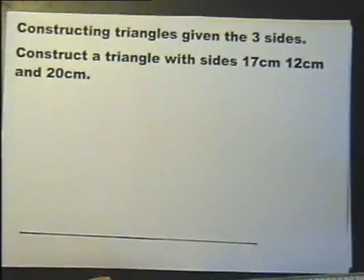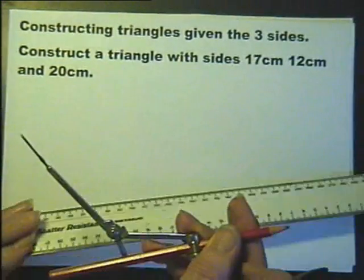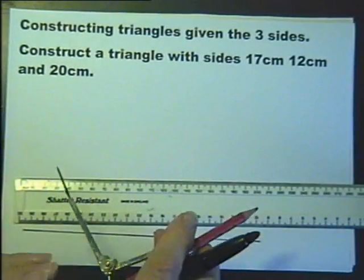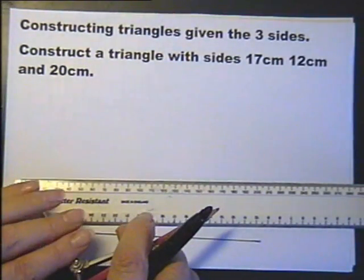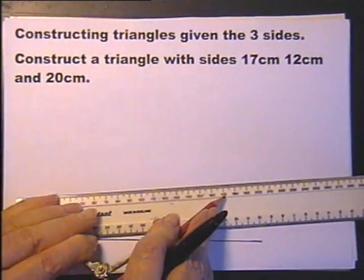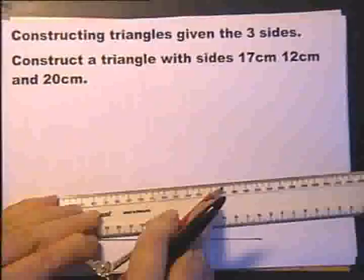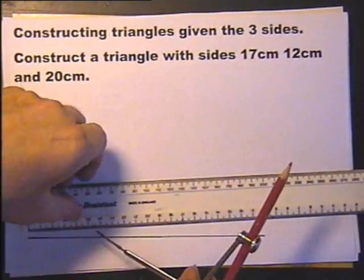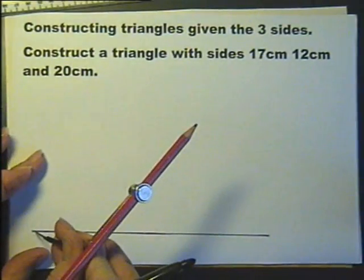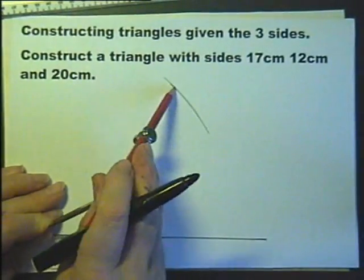And then the rest of it, to be constructed, we must use a pair of compasses. So pick either of those measurements next. It doesn't actually matter which one. So I'll pick the 17. Put the compasses points there and there, 17. Set the compasses point in one end of the line and draw what is called an arc.